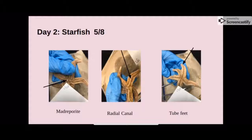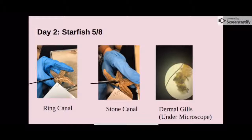Here are the first three pictures from our dissection. The far left picture shows the madreporite, where the seawater initially enters. The middle picture shows the radial canal and the tube feet, which filter out the oxygen. The additional pictures show the ring canal and stone canal, which are steps in getting the seawater to the tube feet. The dermal gills serve for respiration and waste removal.